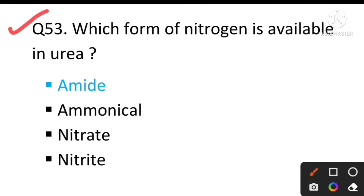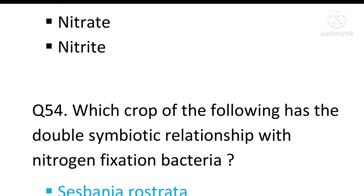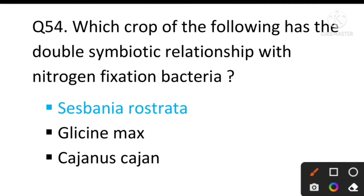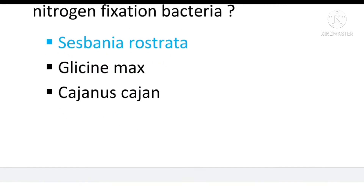Question number 53: Which form of nitrogen is available in urea? The answer will be amide. Question number 54: Which crop has a double symbiotic relationship with nitrogen-fixing bacteria? The answer will be Sesbania rostrata.